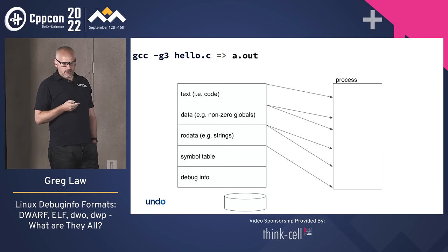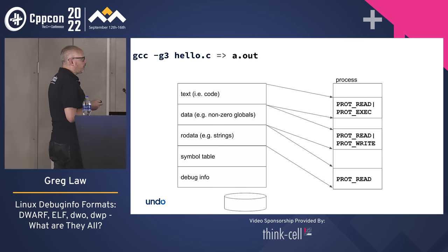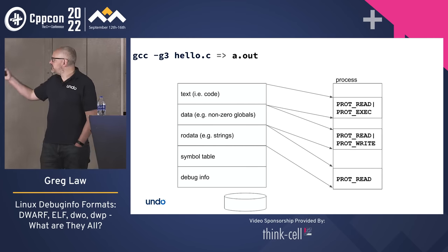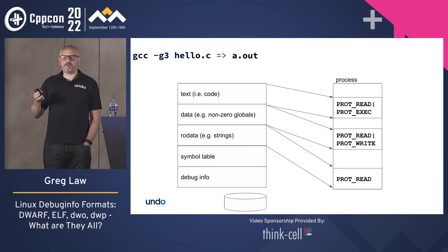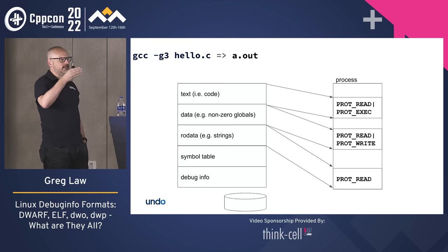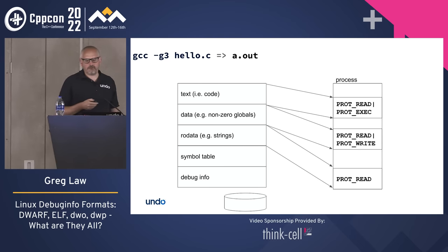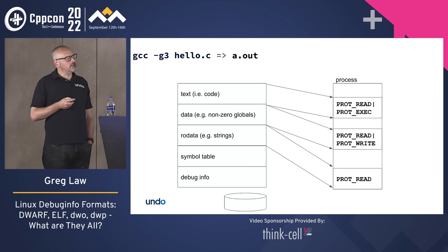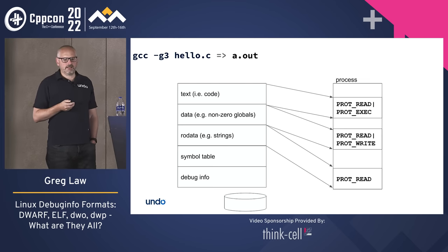We can apply appropriate protection to these different segments when they're in memory. Read/write for data obviously; exec — preferably without any prot-exec-and-write sections, because otherwise we're vulnerable to buffer overflow attacks. With older GCC nested functions, they'd put little thunks on the stack, giving writable stacks, but that's pretty rare these days. Read-only data just needs a read permission so that if we try and change it, it'll fault.